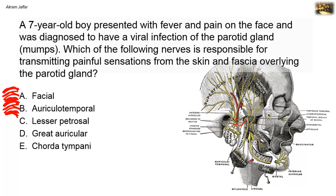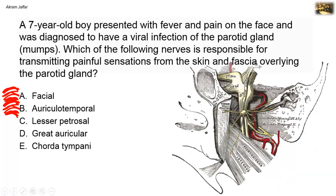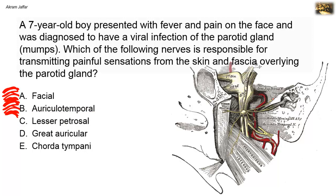The next option is the lesser petrosal nerve. It is a branch from the tympanic plexus of the middle ear. It leaves the middle ear, perforates the petrous part of the temporal bone in the middle cranial fossa, then exits through the foramen ovale, where it synapses in the otic ganglion. It carries preganglionic parasympathetic fibers that originate from the glossopharyngeal nerve. The postganglionic fibers are then carried by the auriculotemporal nerve to the parotid gland, but again these fibers are secretomotor, not sensory.